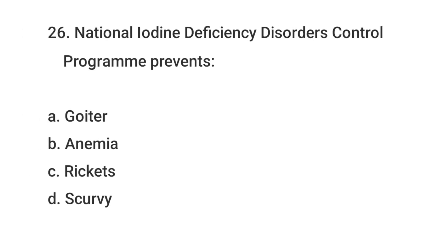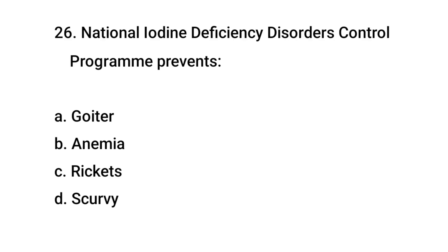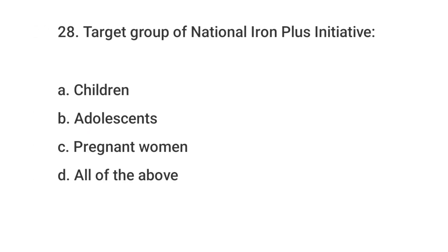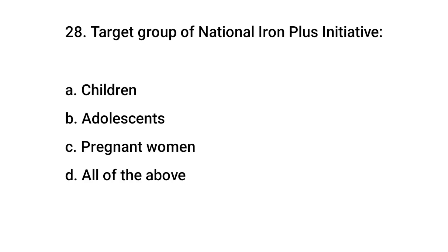Question number 26: National Iodine Deficiency program — the right answer is A: Goiter. Question number 27: National Iron Plus Initiative addresses — the right answer is B: Anemia. Question number 28: National Iron Plus Initiative — the right answer is D: All of the above.